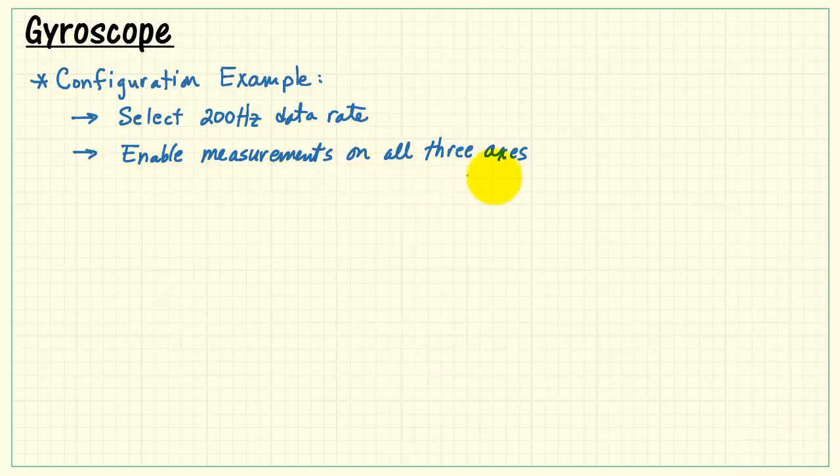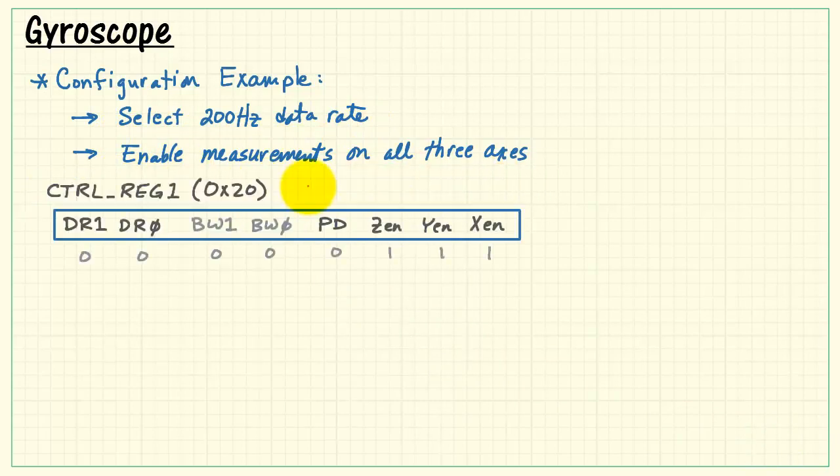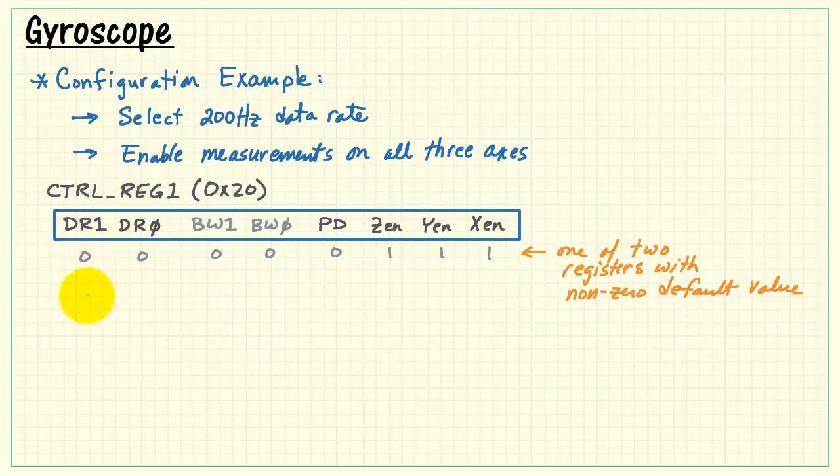We need to select a 200 Hz data rate and then enable measurements on all three axes. Looking at control reg register number 1. This is one of two registers with non-zero default values. We see that all three axes are enabled by default. These two bits select the data rate.